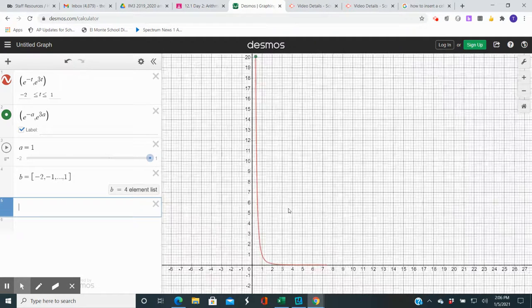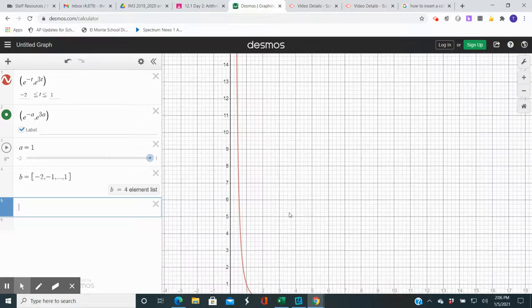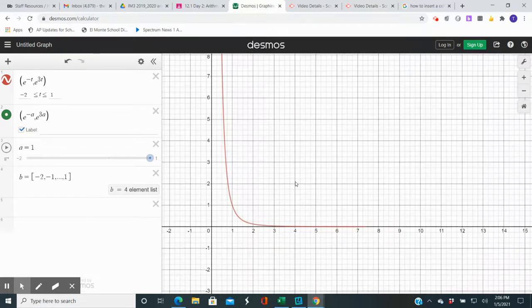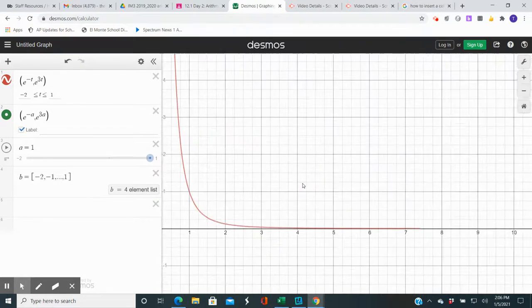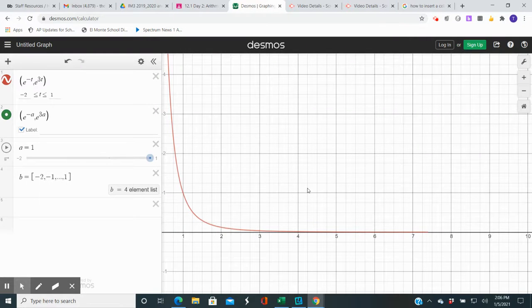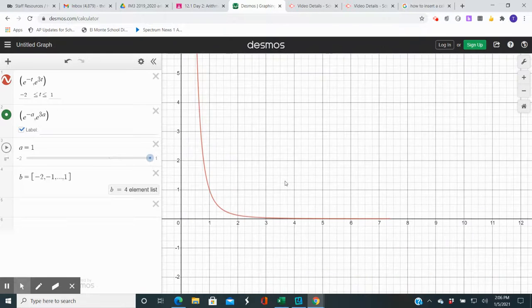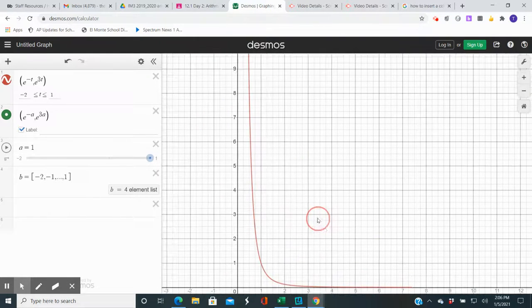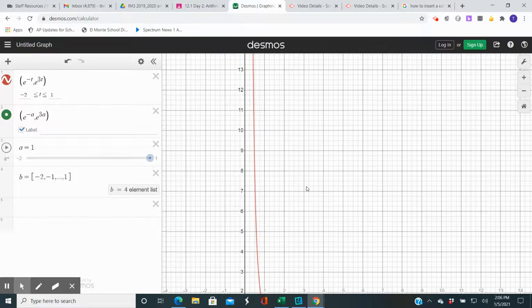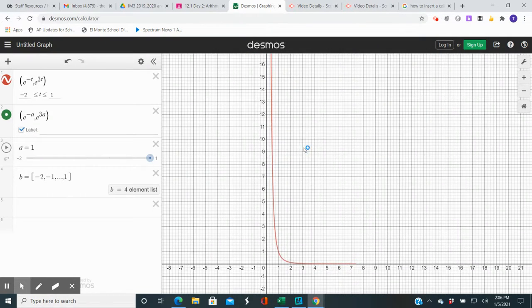this is the graph that you get. You can see that the graph appears to have a horizontal asymptote, the line y is equal to 0, and it also appears to have a vertical asymptote, which would be the line x is equal to 0.